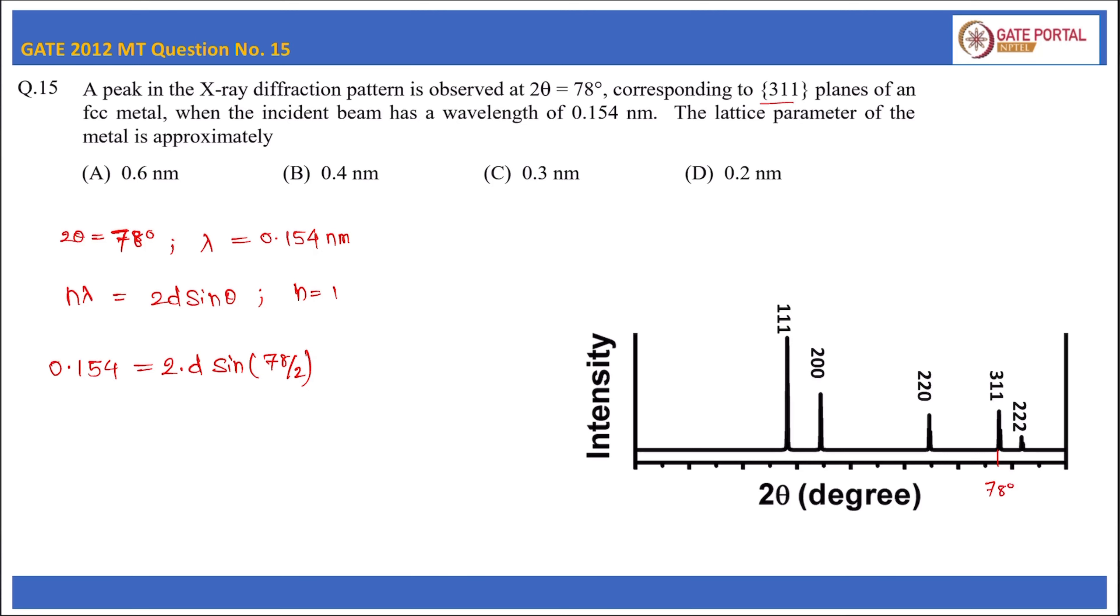We know the interplanar spacing d can be written in terms of the lattice parameter: d = a / √(h² + k² + l²). So d = a / √(3² + 1² + 1²) = a / √11.